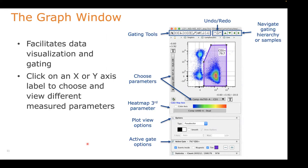Here's our graph window — this is where we'll interact a lot with our data files. Up at the top of the graph window are different gating tools, undo and redo buttons, and a way to navigate up and down your gating hierarchy or through samples in your group. On either axis of the graph window are parameter selectors, where we can choose different parameters to display. There's also a tertiary color axis option to color-map the MFI or expression of a third parameter on top of the two already displayed.